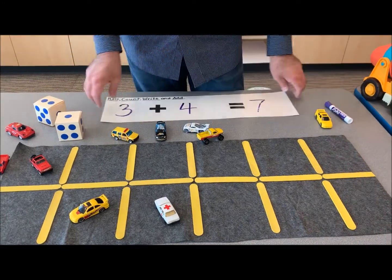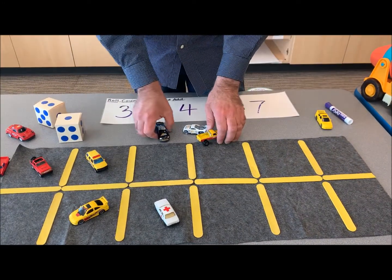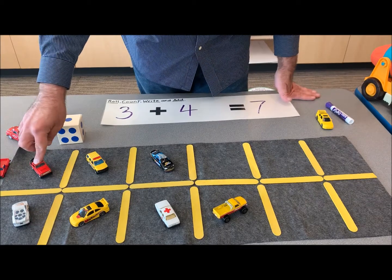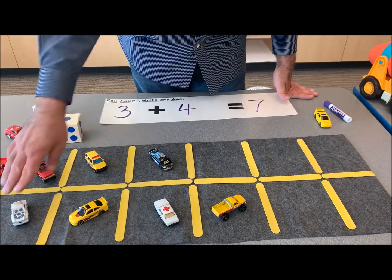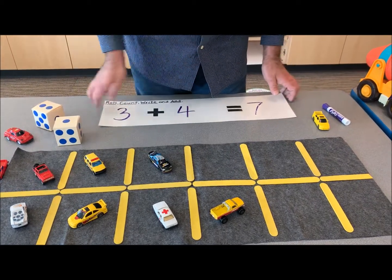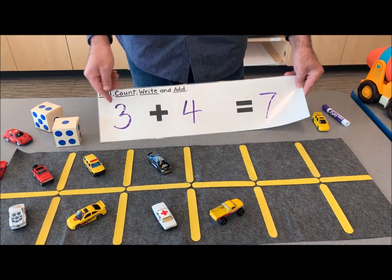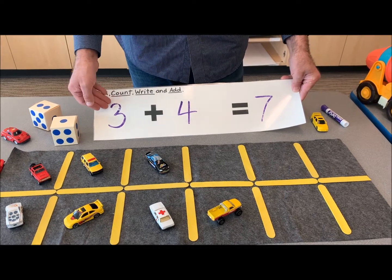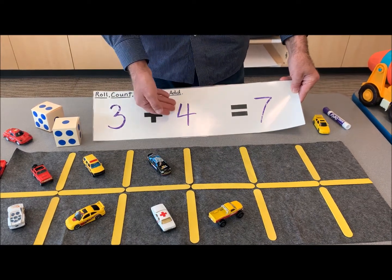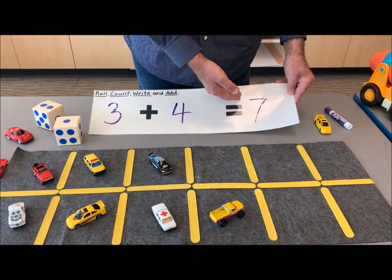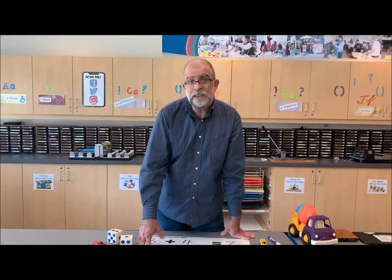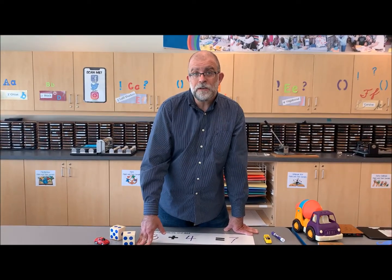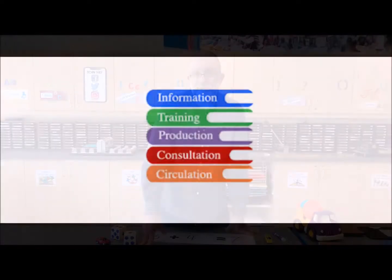I used three plus four — so we could do three plus four. The kids can count one, two, three, four, five, six, seven. Then the kids can practice writing number sentences: three cars plus four cars equals seven cars. Thank you for watching another Learn and Create video from the LRC.